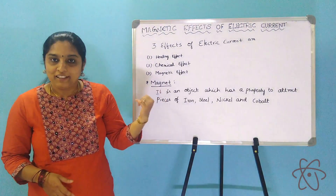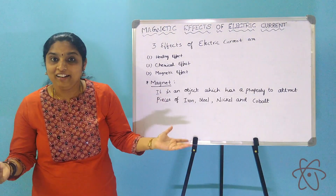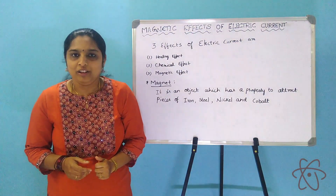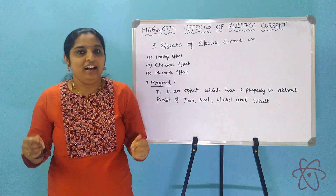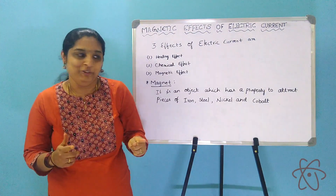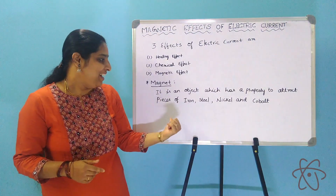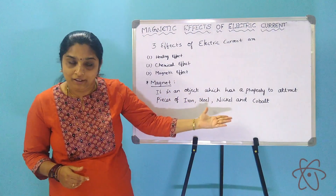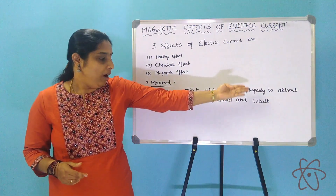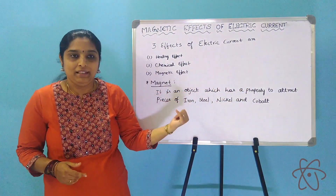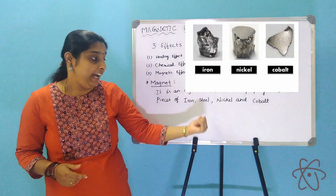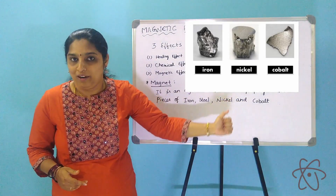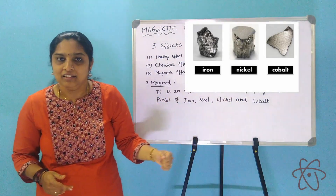So first let us understand what magnets are. A magnet is an object which has the property to attract pieces of iron, steel, nickel, and cobalt.